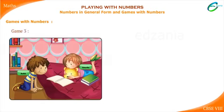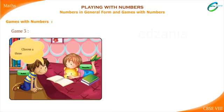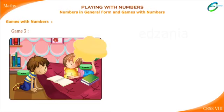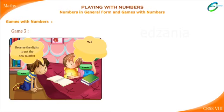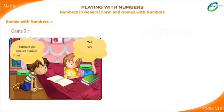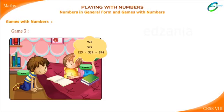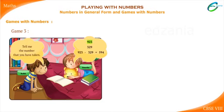Now it's Rohit's turn to play some tricks involving three-digit numbers. Anusha is ready to learn this new trick. Rohit: Choose a three-digit number. Anusha: Alright — 923. Rohit: Reverse the digits to get the new number. Anusha: 329. Rohit: Subtract the smaller number from the larger one. Anusha: 923 minus 329 equals 594. Rohit: Tell me the number you've taken. Anusha: 923. Rohit: Your answer is 594.